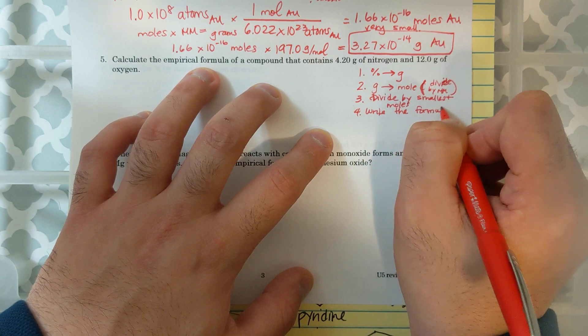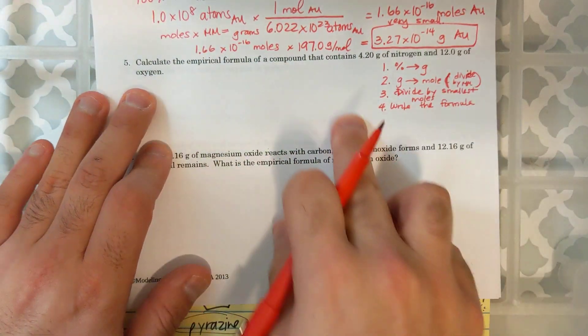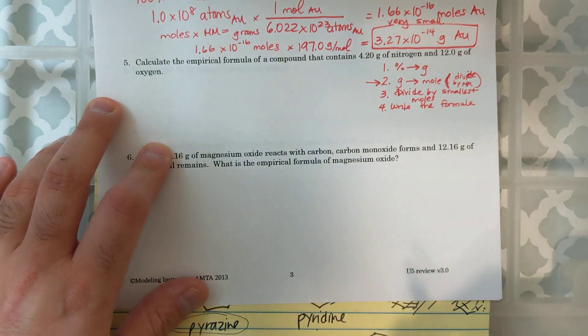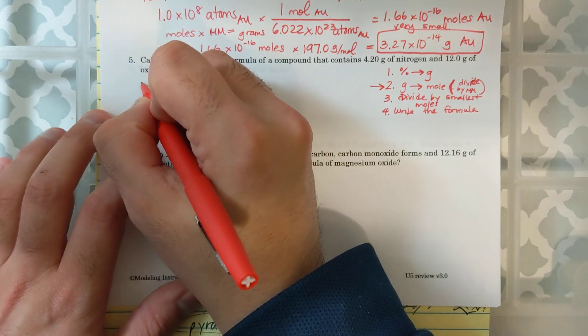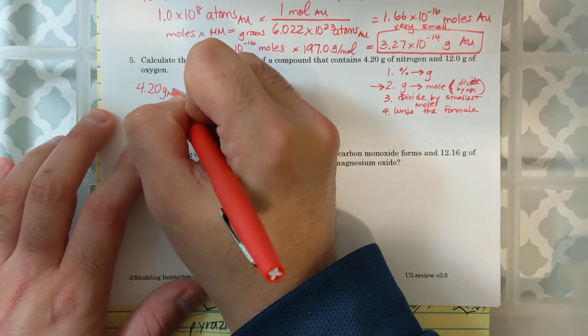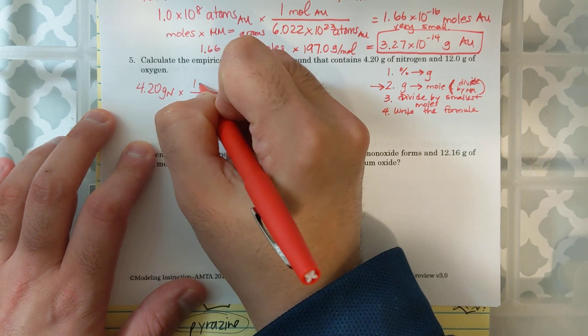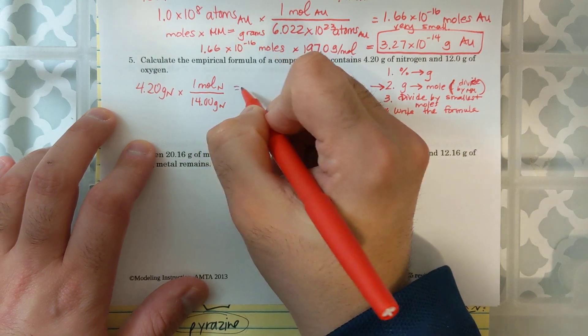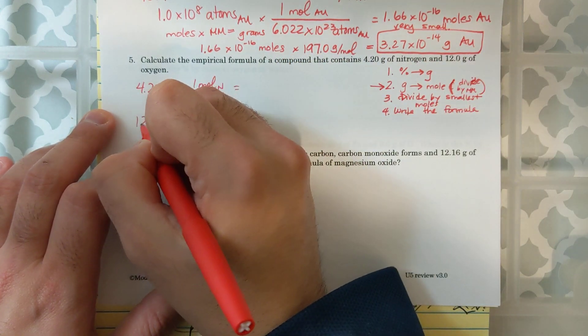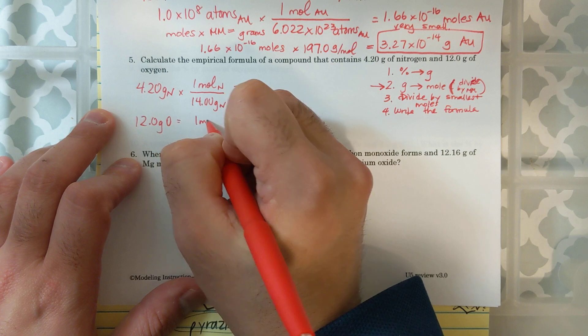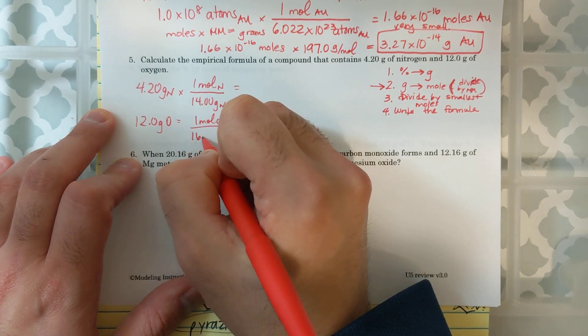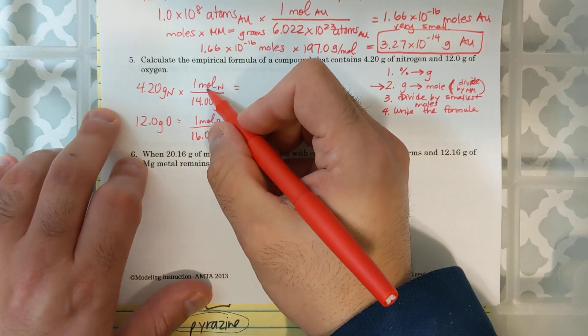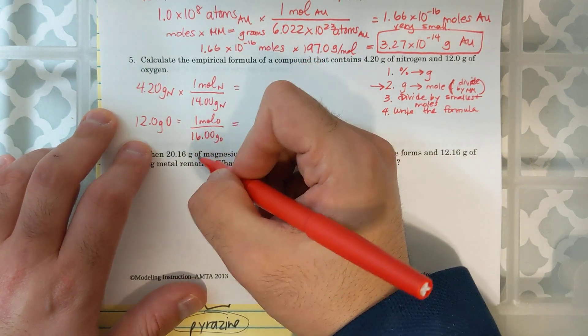This is kind of like another abridged version to the steps. Now we're already at step 2. For this problem, we are at step 2. I have 4.20 grams of nitrogen and 12 grams of oxygen. So I'm going to start by, I have 4.20 grams of nitrogen. One mole of nitrogen is about 14 grams of nitrogen. And then I'm going to have 12 grams of oxygen. And one mole of oxygen is 16 grams of oxygen. I'm rounding here.